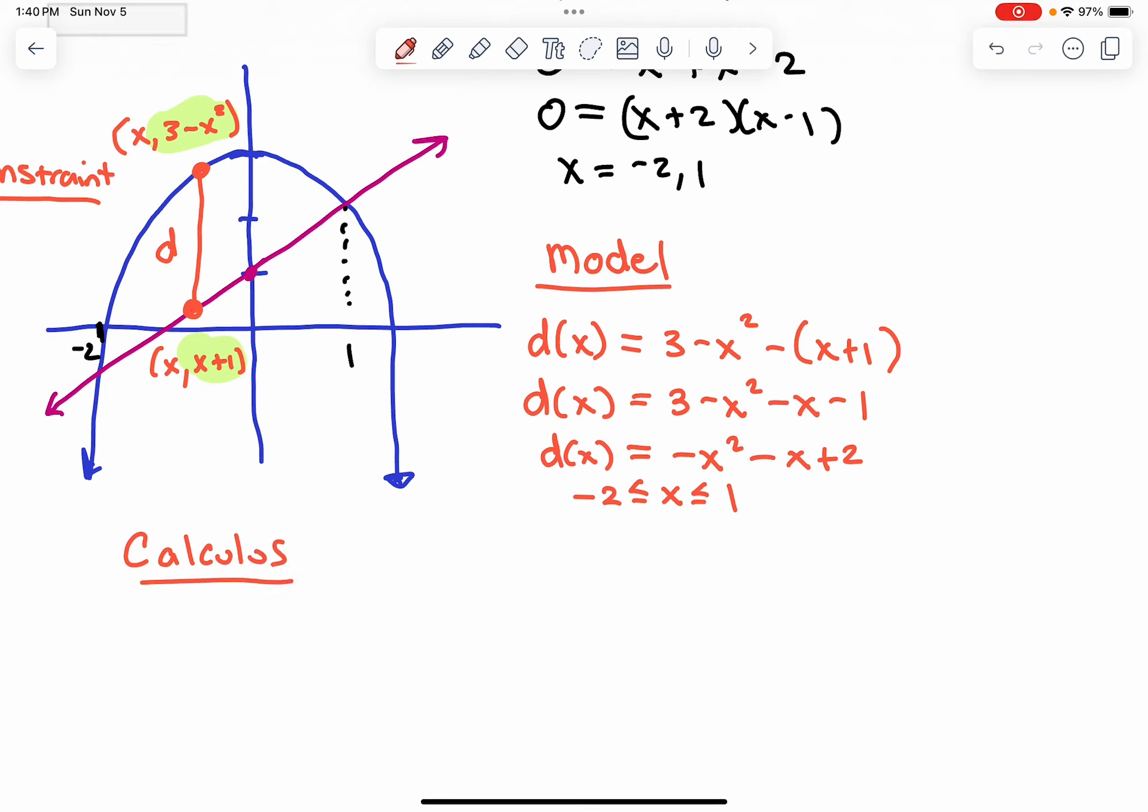We've got a model. We take its derivative. So d prime of x would be negative 2x minus 1. It's not undefined anywhere, so our critical points are where it's equal to 0. And this produces x is equal to negative 1 half. So we found a critical point, how do we know it's a max?